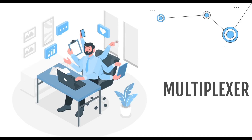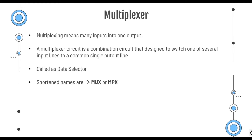We are going to talk about the multiplexer. Multiplexing is the generic term used to describe the operation of sending one or more analog or digital signals over a common transmission line at different times or speeds. The device used to do that is called a multiplexer. This multiplexer is a combinational logic circuit designed to switch one of several input lines through to a single common output line by the application of a control signal.